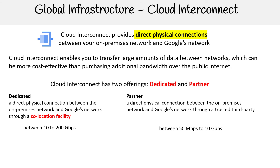The reason you would use a partner interconnect is maybe because you just can't do dedicated based on your location, so you have to work through a partner — or maybe it's more cost-effective, or it doesn't meet your needs. It's just going to be dependent on that kind of stuff. But generally, the reason people go with partners is because they just can't get the dedicated one.